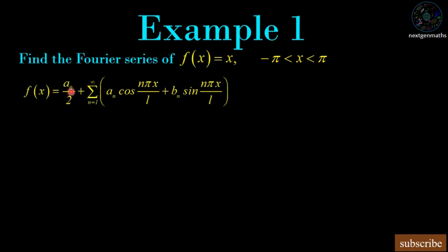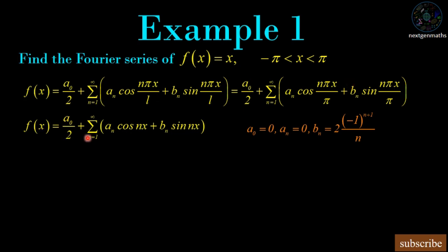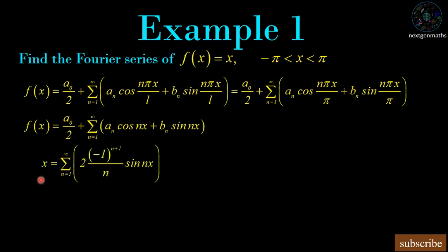The Fourier series is f(x) = a₀/2 + Σ(n=1 to ∞)[aₙ cos(nπx/L) + bₙ sin(nπx/L)], where L = π. The π's cancel, giving a₀/2 + Σ(n=1 to ∞)[aₙ cos(nx) + bₙ sin(nx)]. For f(x) = x, a₀ = 0, aₙ = 0, and bₙ = 2(−1)ⁿ⁺¹/n. Substituting: x = Σ(n=1 to ∞) [2(−1)ⁿ⁺¹/n] sin(nx).